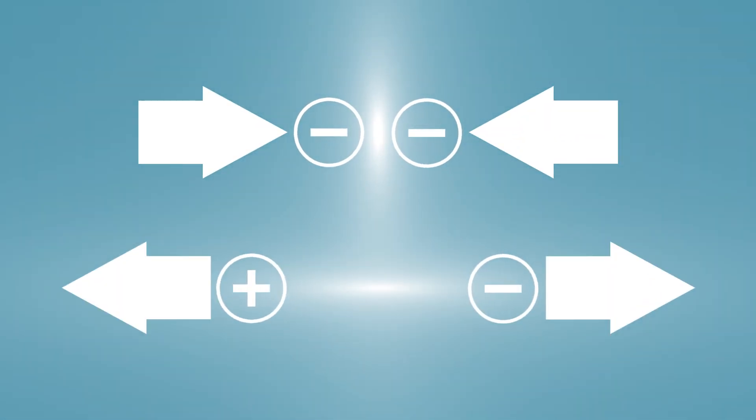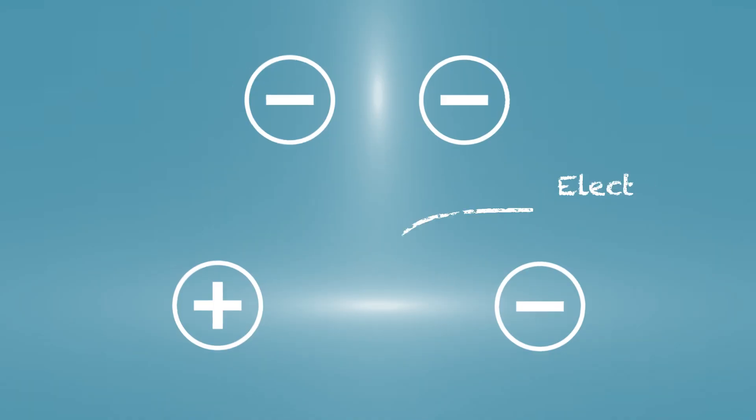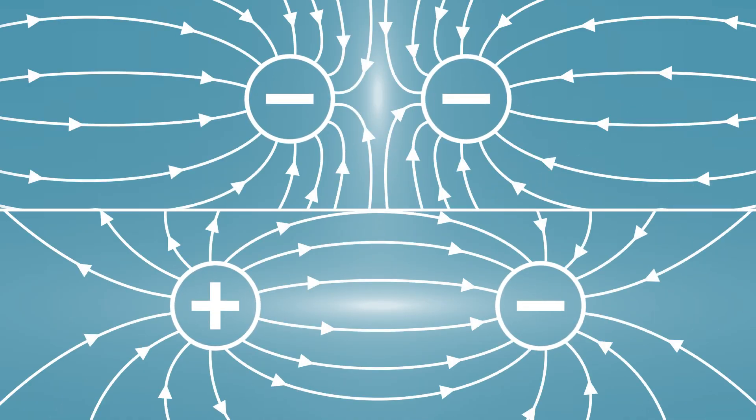Electricity is made up of positive and negative static and moving charges like protons and electrons. These repel similar charges and attract their opposites. Pushing like charges together or pulling opposite charges apart takes work, which stores electrical potential energy in the form of a field between them.